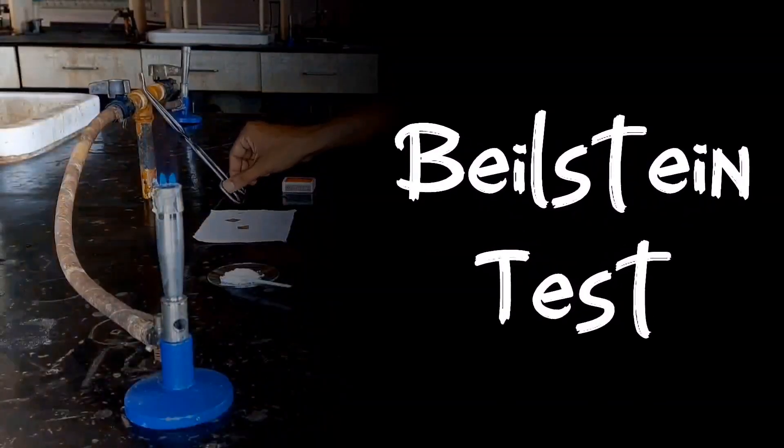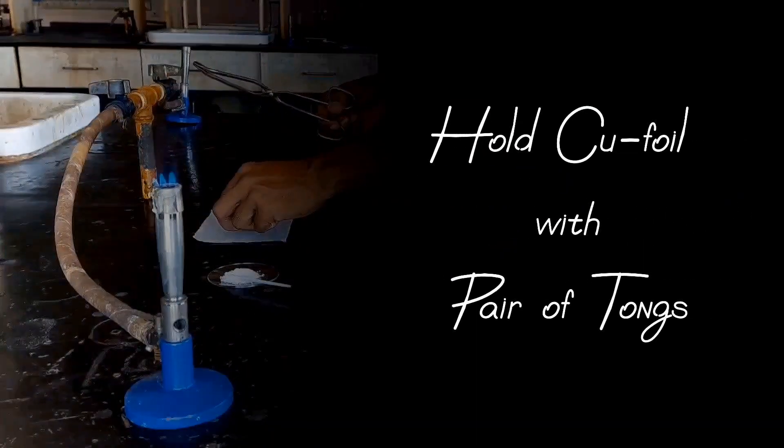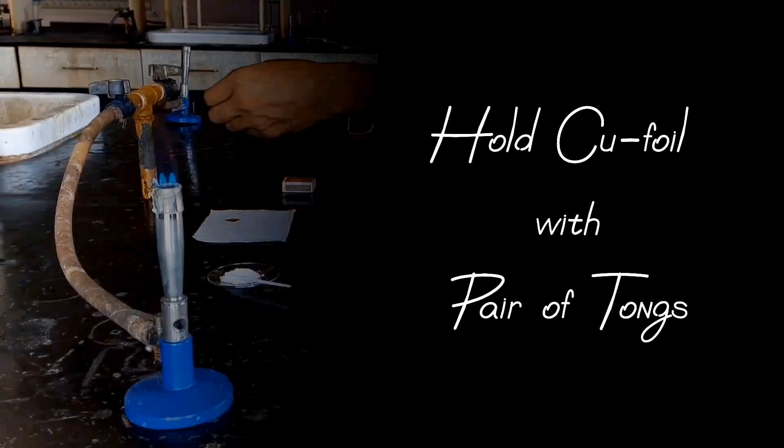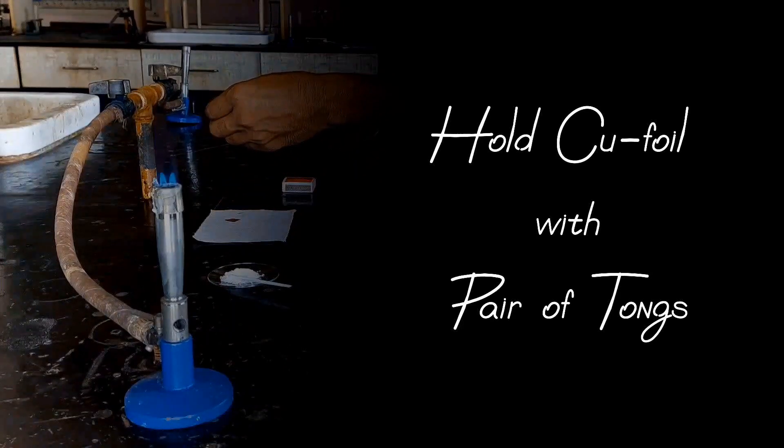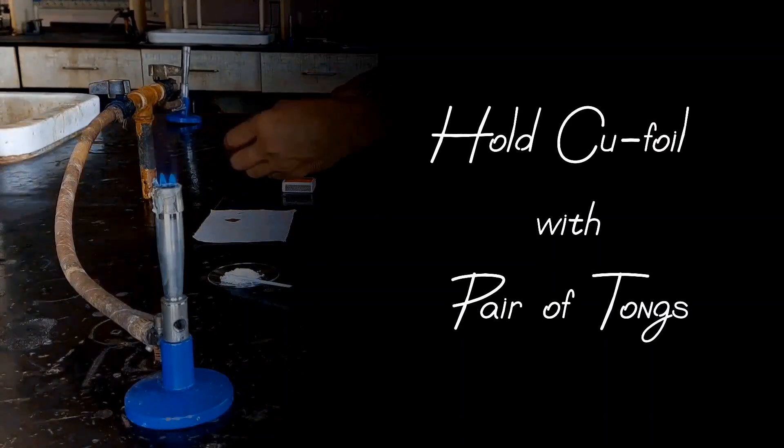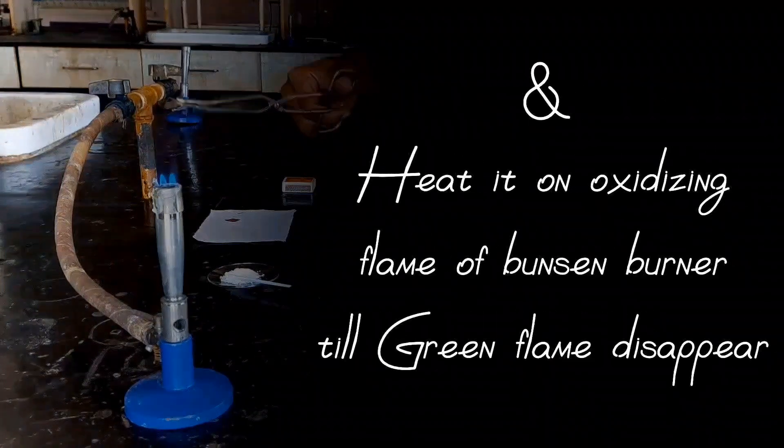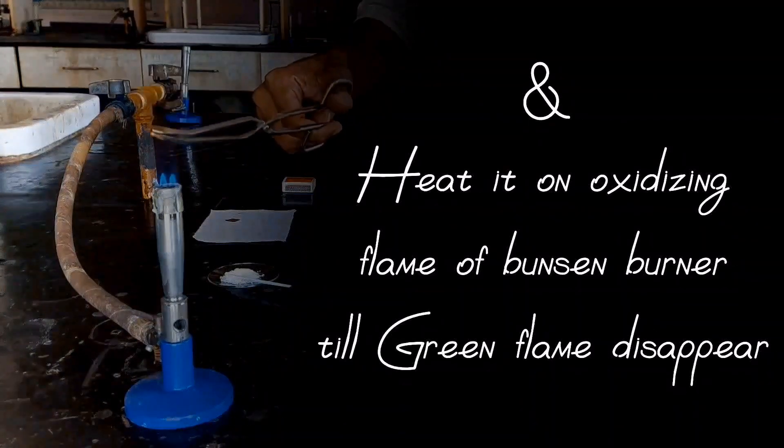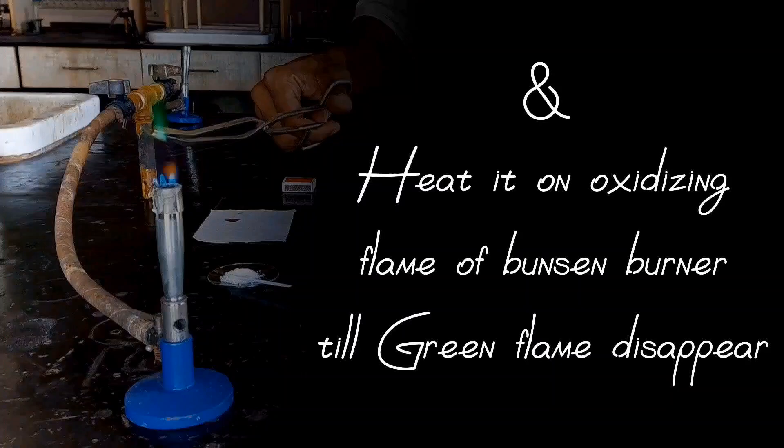Beilstein test: Hold copper foil with pair of tongs and heat it on oxidizing flame of Bunsen burner till green flame disappears.